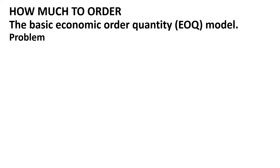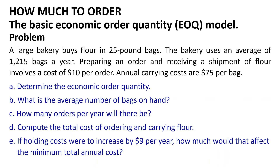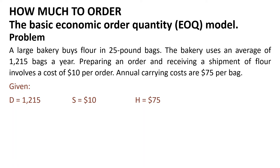After solving that example, let us solve a problem. A large bakery buys flour in 25-pound bags. The bakery uses an average of 1,215 bags a year. Preparing an order and receiving a shipment of flour involves a cost of $10 per order. Annual carrying costs are $75 per bag. The givens are: D = 1,215, S = $10, and H = $75.